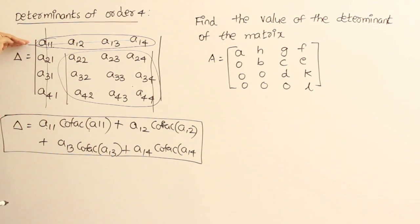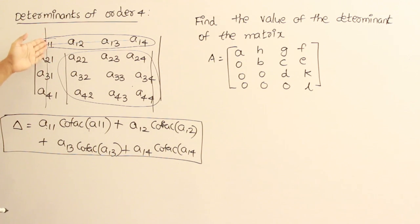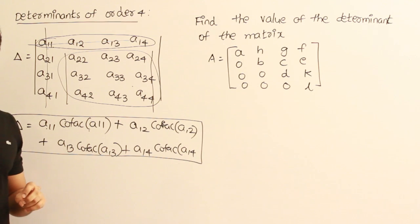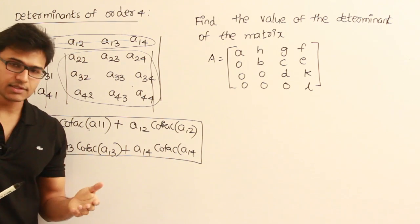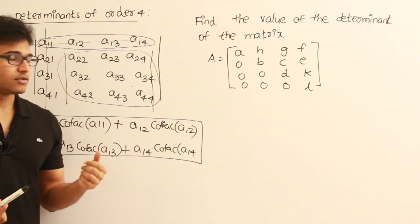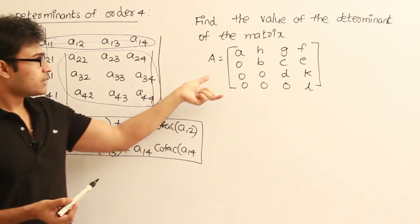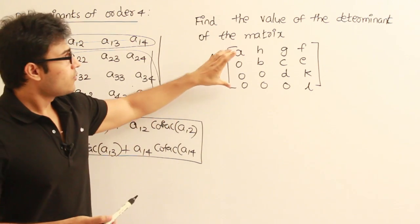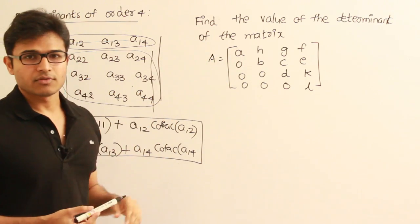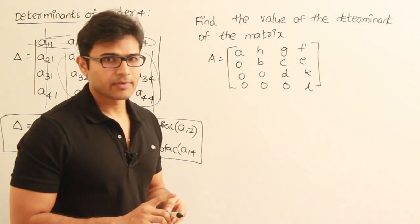You need not expand across the first row always — you could expand across the first column; it depends on which way you feel comfortable or which way is easier. Let's look at an example to understand it much better. This is a matrix of order 4, and we are supposed to find its determinant.